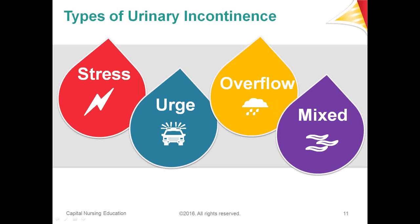Urge incontinence is an uncontrolled loss of urine associated with a sudden desire to void. A larger amount is lost rapidly, and it can be triggered by running water, washing dishes, or something as simple as turning a key in a door. The entire bladder contents are often lost rather than just a few drops. Urge incontinence can be triggered by drinking too much water, coffee, other caffeine, or alcohol.